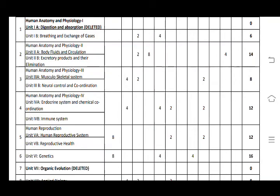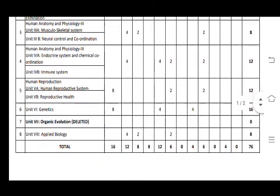And next Unit 4 — Endocrine System & Chemical Coordination and Immune System. So Unit A and Unit B — these have 3 very short answers, with a total of 12 marks, including 2 very short and 2 short answer questions.